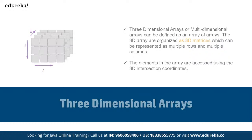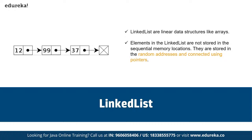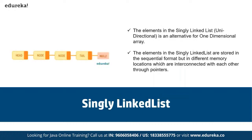A linked list is a linear data structure consisting of multiple nodes where each element stores its own data and a pointer to the location of the next element. The last node points to null, indicating the end of the chain. An element in a linked list is called a node; the first node is called the head and the last node is called the tail. A singly linked list is unidirectional — elements are stored sequentially in different memory locations interconnected through pointers, similar to a one-dimensional array.